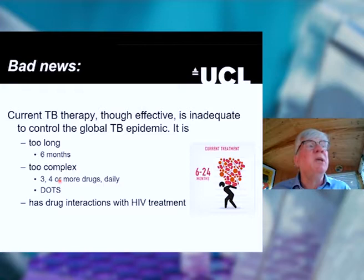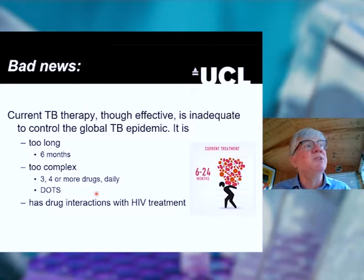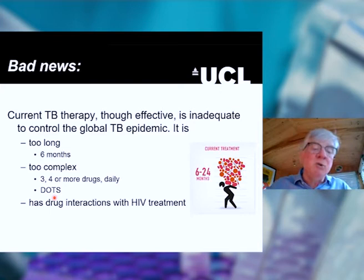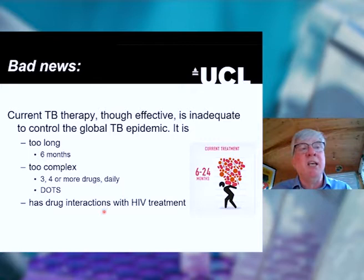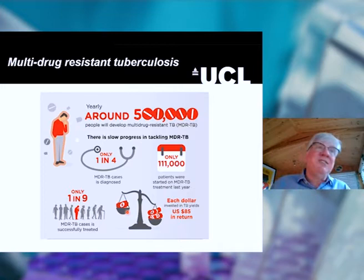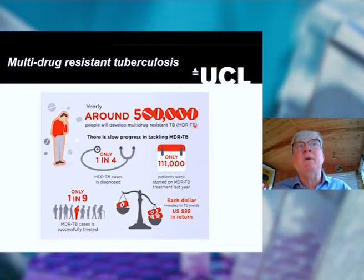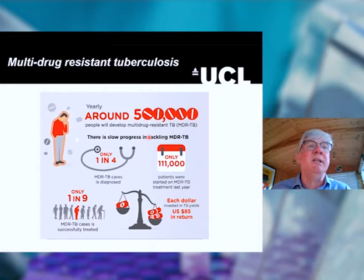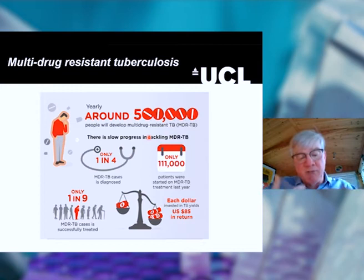To address non-compliance, the WHO introduced DOTS — Directly Observed Therapy, Short Course — where patients are observed taking their TB therapy, ensuring they take it properly. A further complication is drug interactions with HIV treatment. HIV co-exists with TB as a pathogen; not only do the drugs interact but the biology of these two organisms overlaps, causing more severe disease. All of this contributes to the evolution of multi-drug-resistant TB — around half a million people develop drug-resistant TB each year, with only one in nine successfully treated.